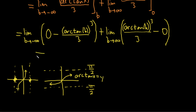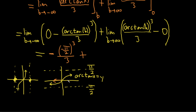So, as b approaches negative infinity, the arctangent of b approaches negative pi over two. That means the first limit gives us negative — negative pi over two, cubed, over three. And as b approaches infinity, arctangent of b approaches pi over two, so the second limit gives us pi over two, cubed, over three.